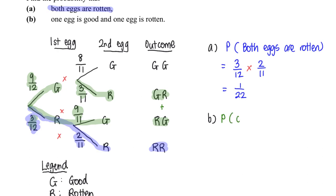Probability that one egg is good and one egg is rotten is simply 9 over 12 multiply by 3 over 11.